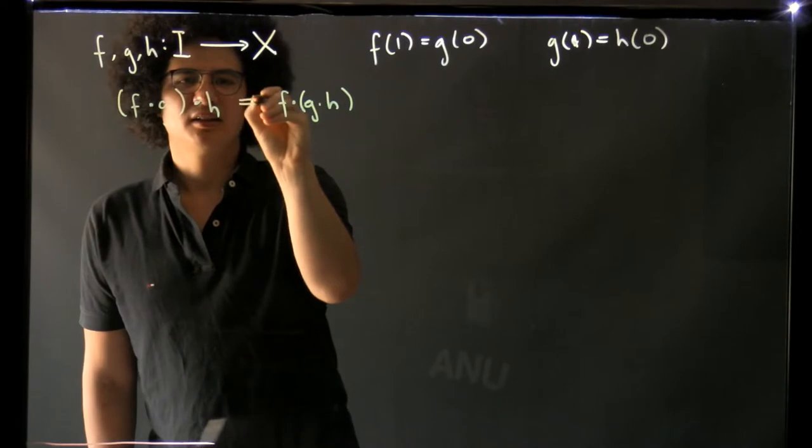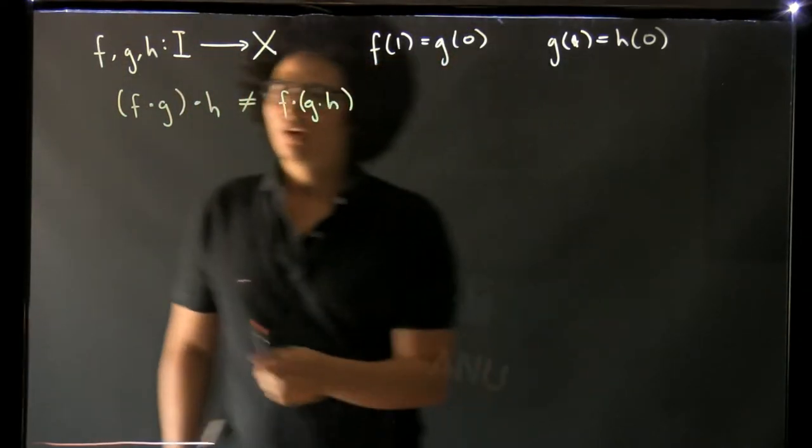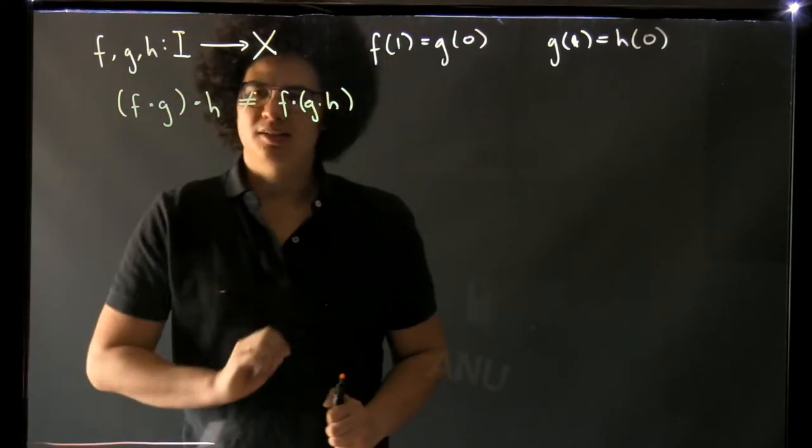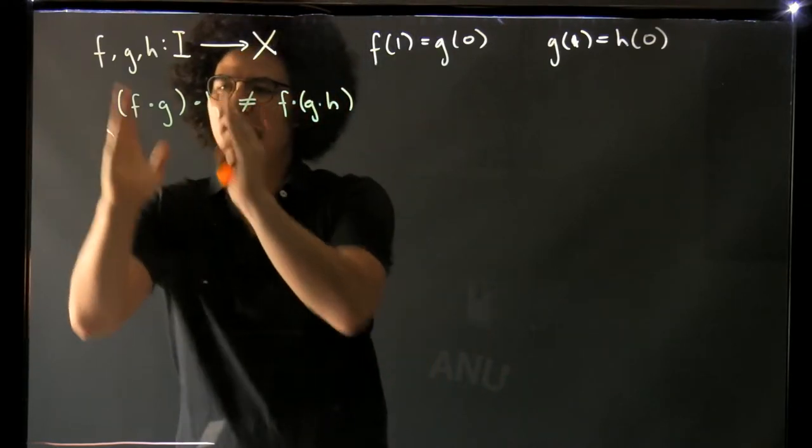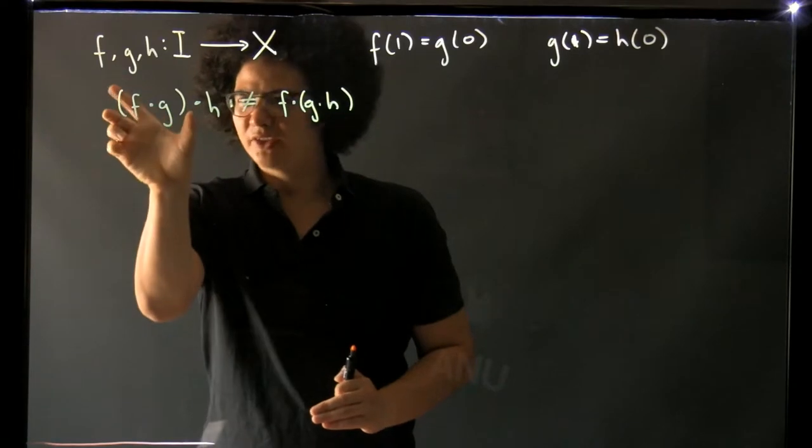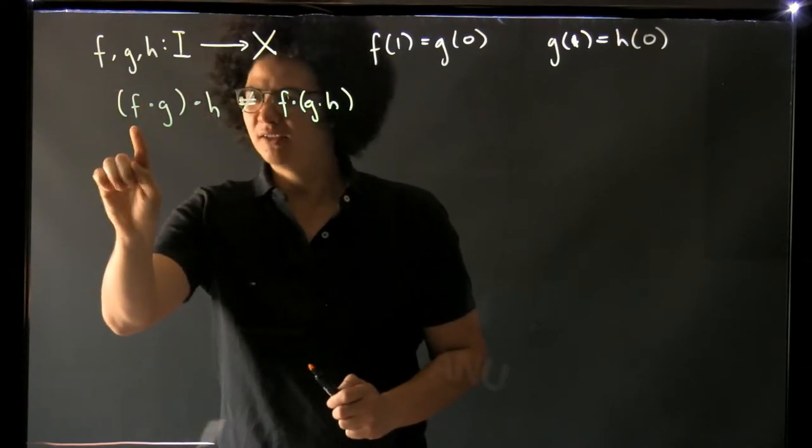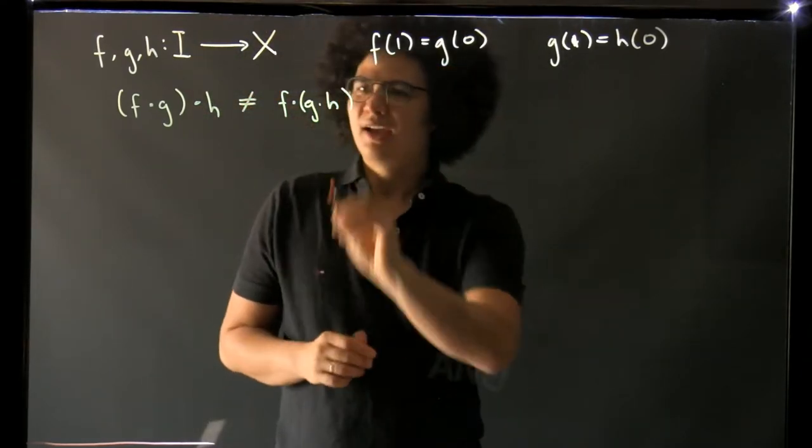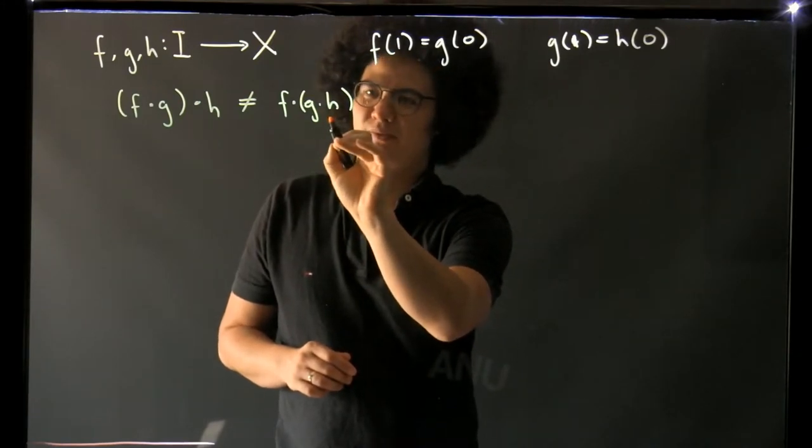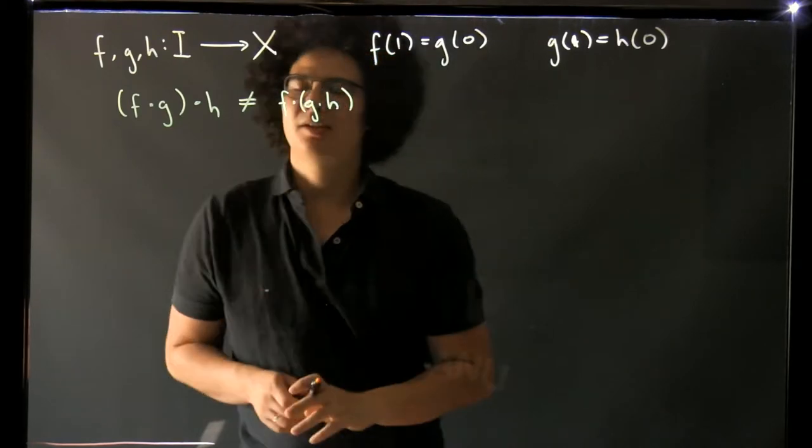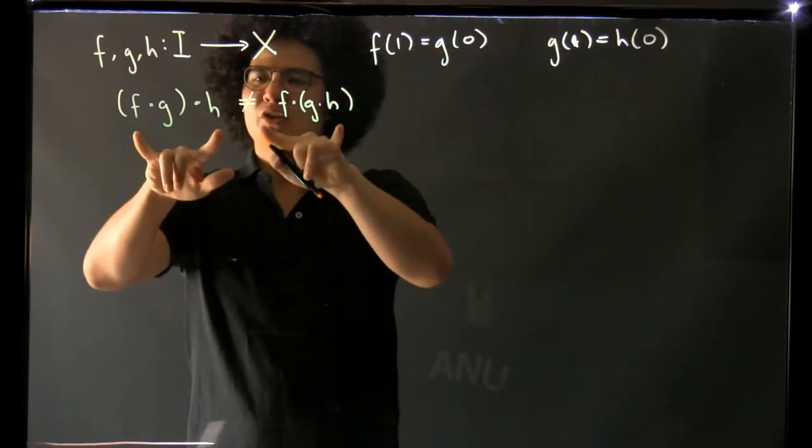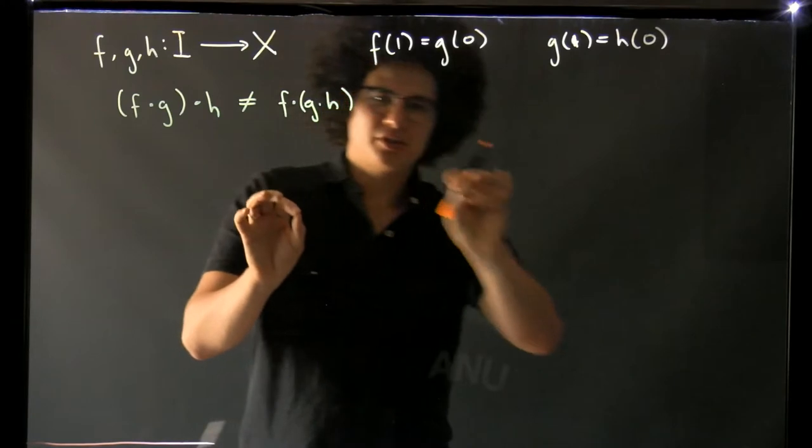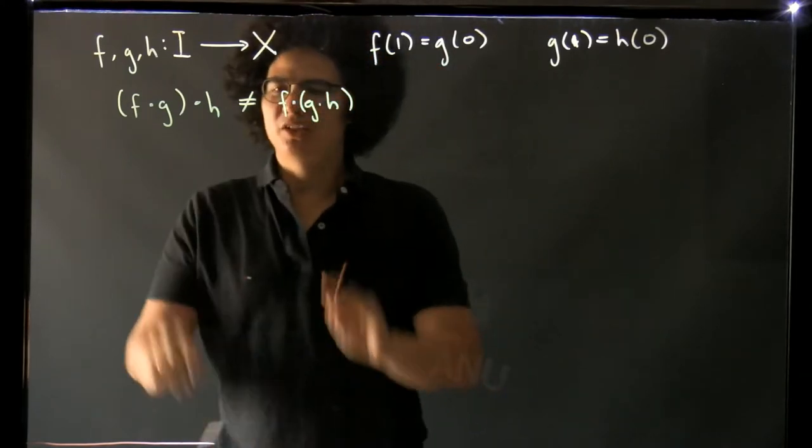But these two paths are not the same as paths because when we first form f composed with g we do f at double speed and g at double speed, but then when we compose with h we do this new path at double speed and h at double speed, so this happens at force speed, this happens at force speed, this happens at double speed. Similarly when we form this, h happens at force speed, g happens at force speed and f happens at double speed. So even though these two paths go over the same elements in x they do so at different speeds so these are not equal as paths.